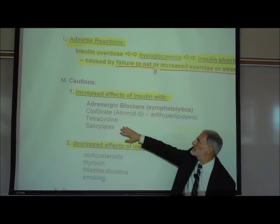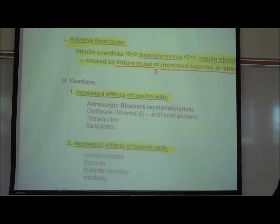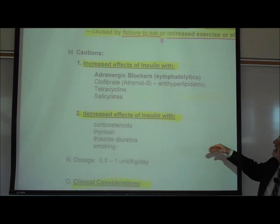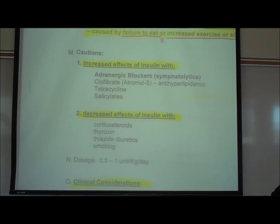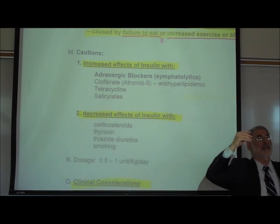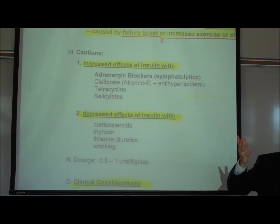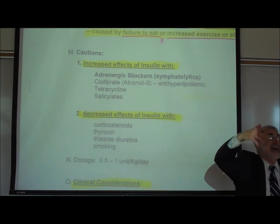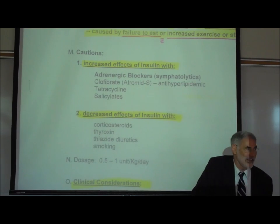Other drugs also lower blood sugar, but the most important are adrenergic blockers, commonly used for cardiovascular problems including angina pectoris and high blood pressure. You'll get a decreased effect with insulin if the patient is on a corticosteroid like prednisone — glucocorticosteroids raise the blood sugar level, so patients on prednisone may need more insulin than normal.